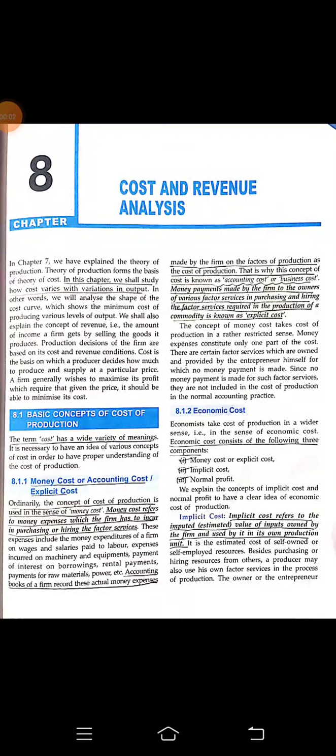Let's begin with Chapter 8 from your economics book of grade 12. The name of the chapter is Cost and Revenue Analysis. In this chapter, we shall study how cost varies with variations in output. So basic concept of cost of output — the term cost has a wide variety of meanings.